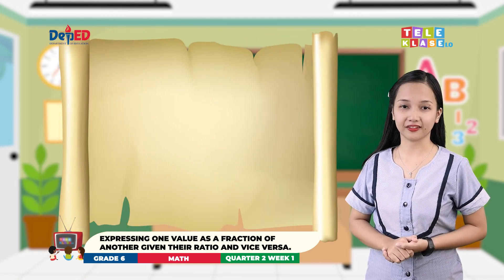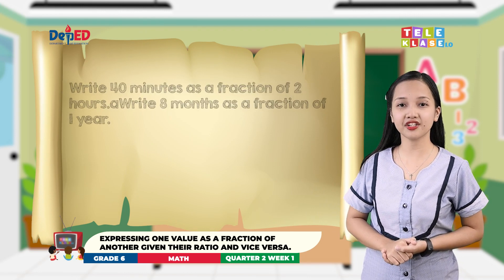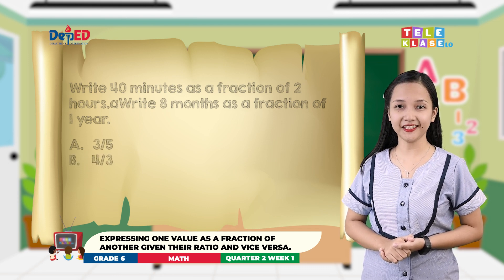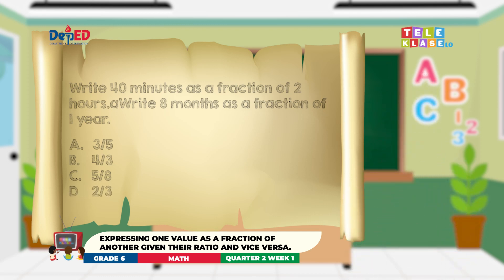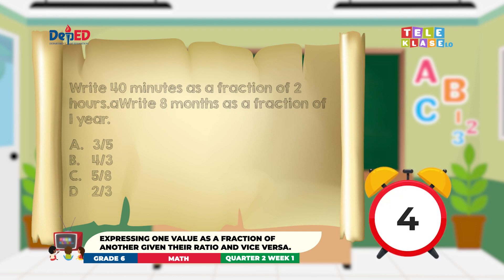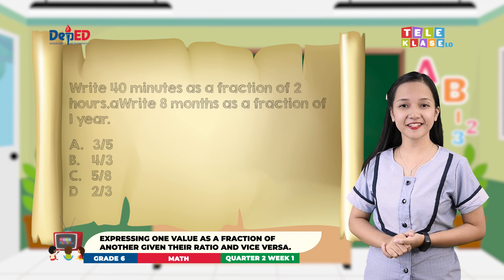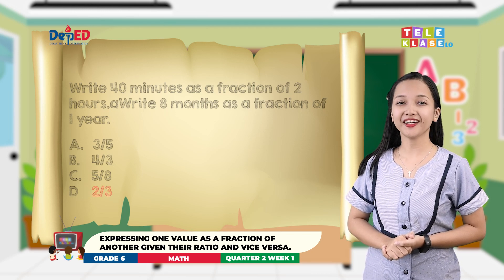Box 2 question: Write 8 months as a fraction of 1 year. A: 3 fifths. B: 4 thirds. C: 5 eighths. D: 2 thirds. The correct answer is 8 over 12, or 2 thirds.